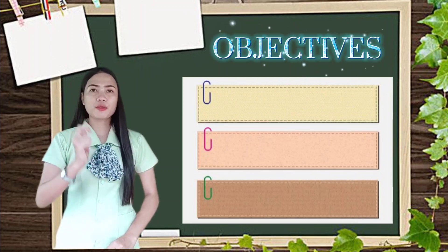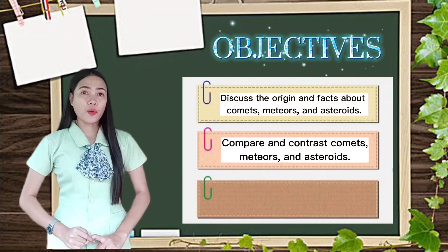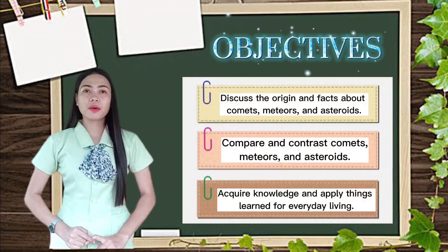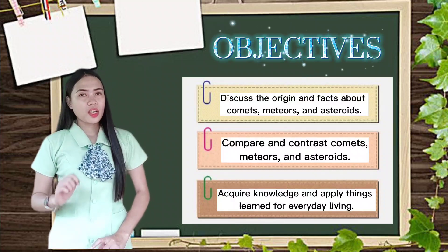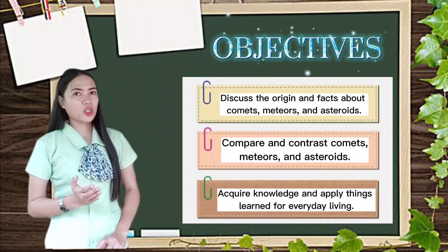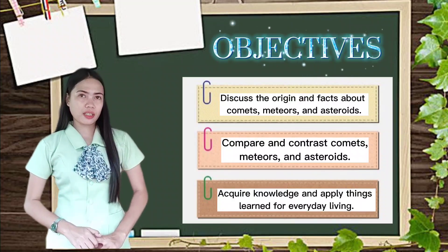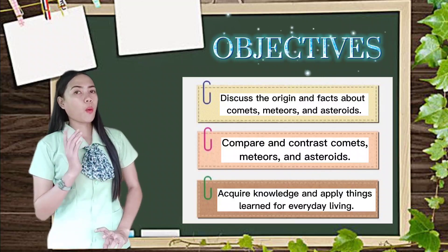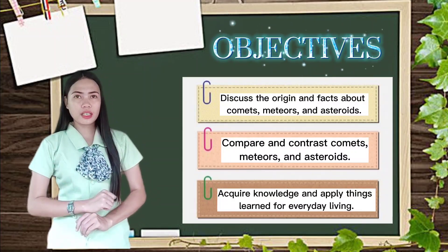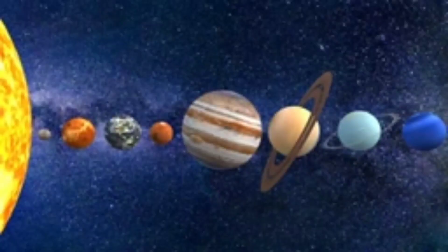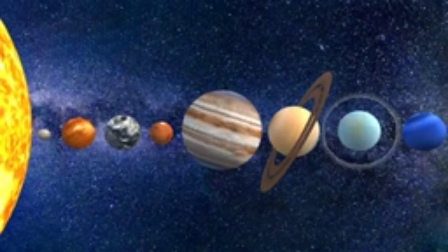Here are our lesson objectives. At the end of the lesson, you are expected to: discuss the origin and facts about comets, meteors, and asteroids; compare and contrast comets, meteors, and asteroids; and acquire knowledge and apply things learned for everyday living. The solar system is composed of nine planets and the Sun at its center.